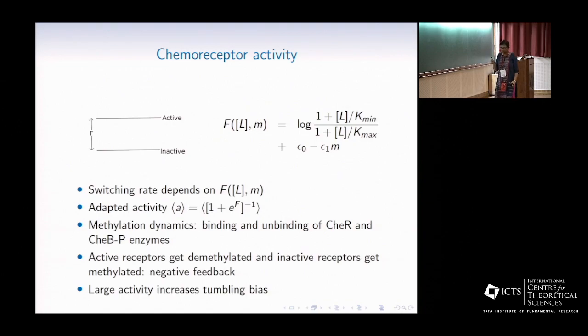The free energy difference between the two states is a function of the ligand or attractant concentration and the methylation level of the receptors. The switching rate between these two levels depends on this free energy. In the adapted state, when the cell is well adapted to its environment, then the average activity, the fraction of active receptors, has this Boltzmann form.